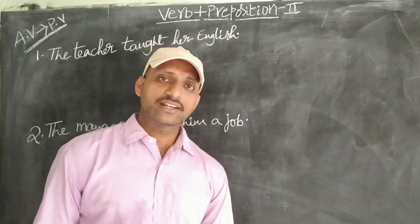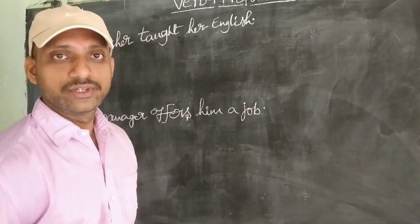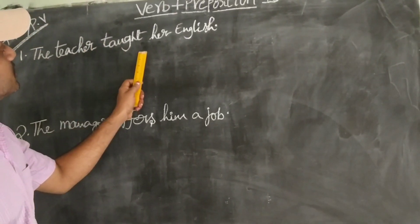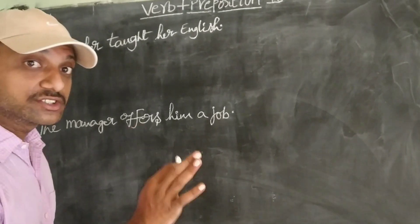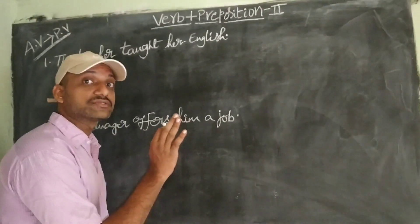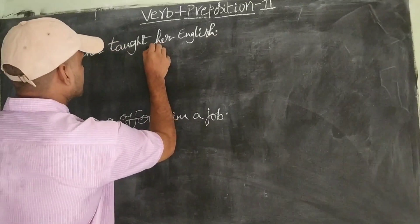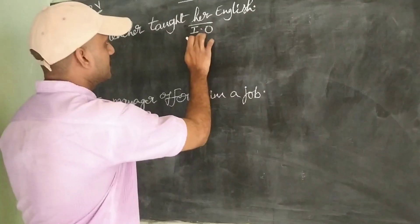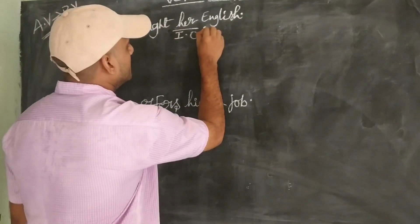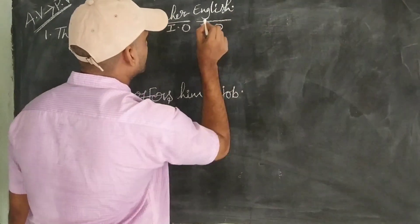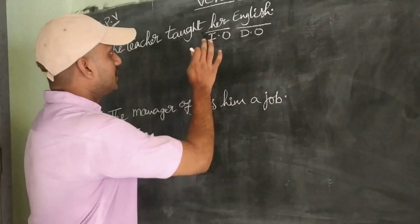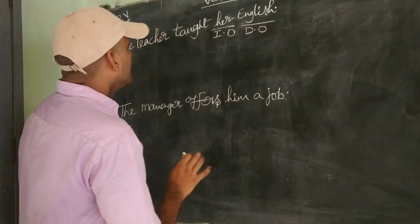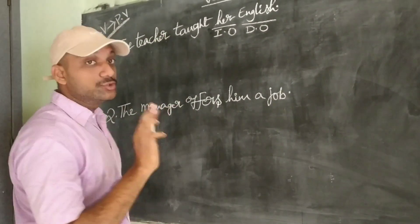Have you understood? Let us see the example in model 2 in another way. See here: 'The teacher taught her English.' How many objects do we have here? Two types of sufferers — 'her' is the indirect object and 'English' is the direct object. Please verify the description to get clarity about direct and indirect objects.